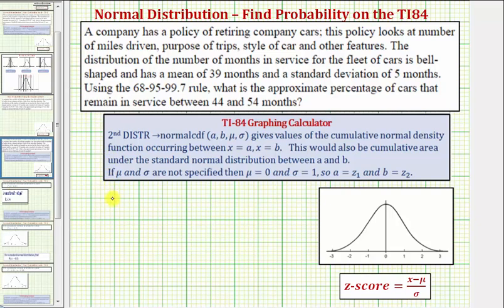So we know that mu, the mean, equals 39, and the sigma of the standard deviation is equal to five.